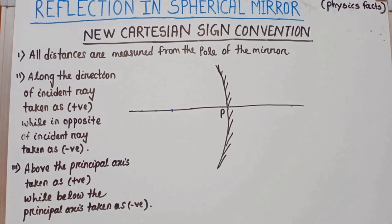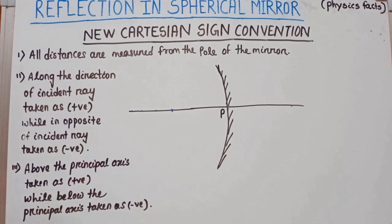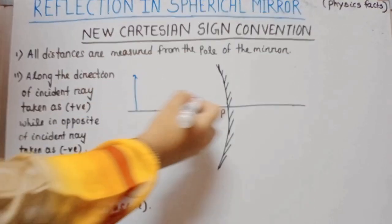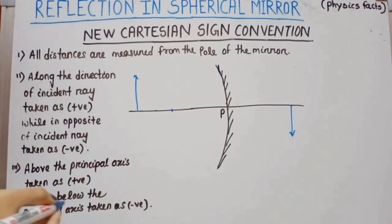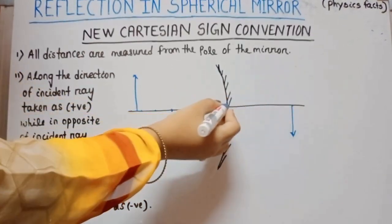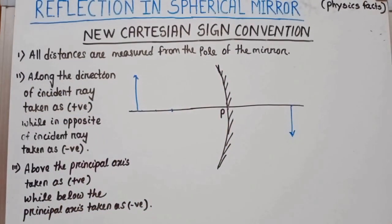Now students, we discuss the sign convention. This is a most important topic and is used in numericals, so students, concentrate. Here we use signs for object distance, image distance, and also for focal length. If we take an object, the distance between the object and the pole is known as the object distance. The distance between the image and the pole is called the image distance. We need to know when the sign is positive and when it is negative.